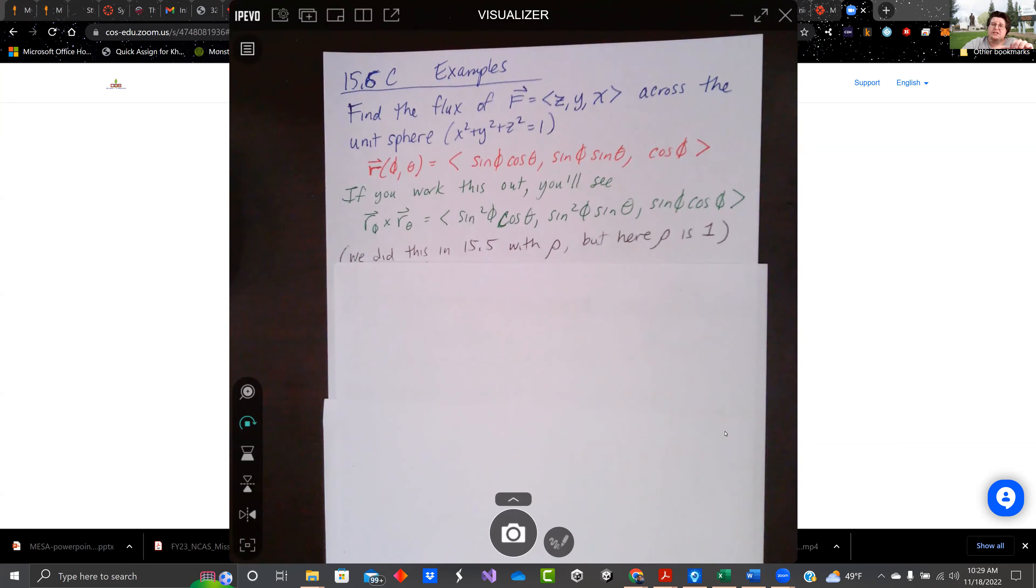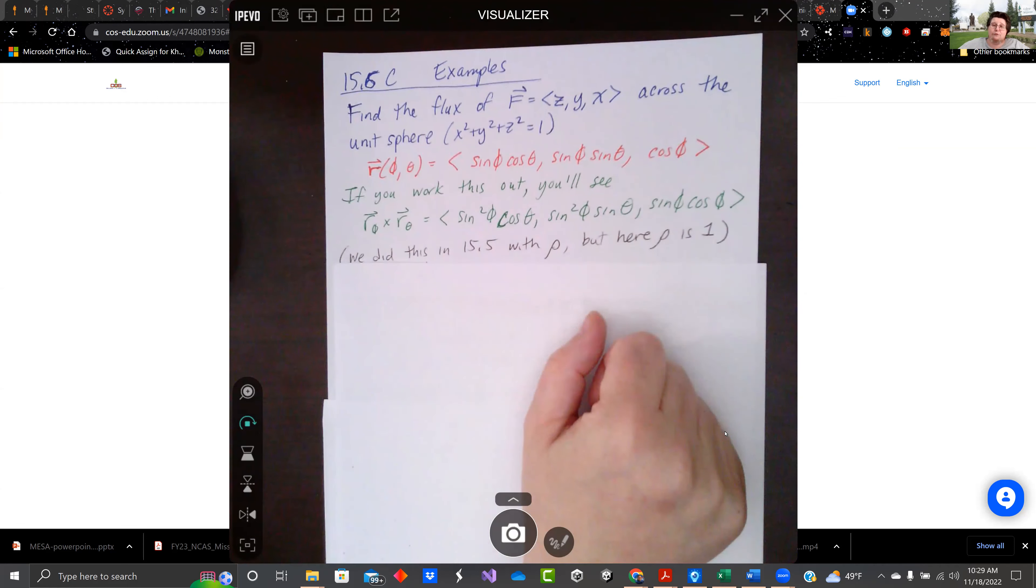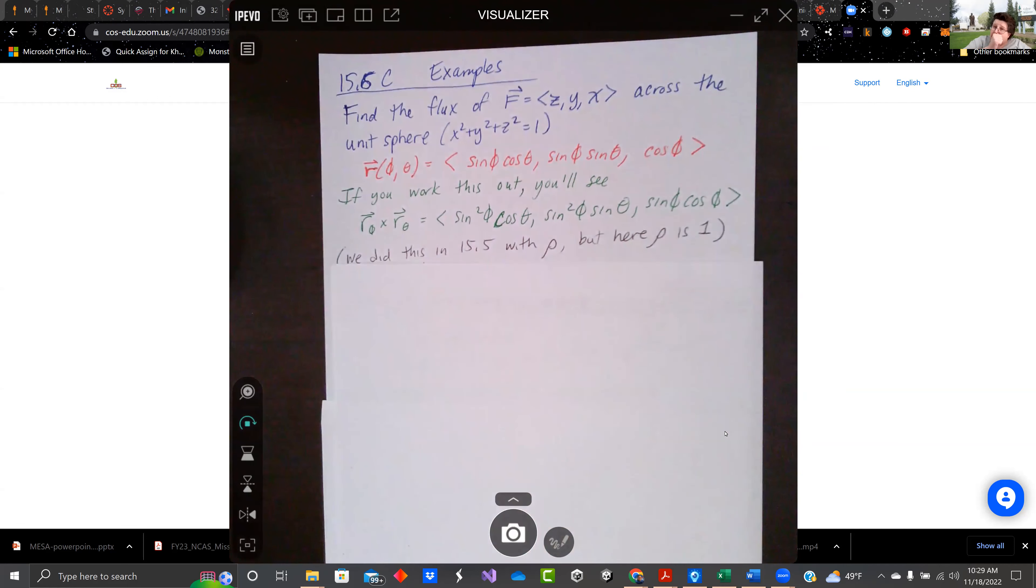Since we're using a sphere, we are going to parameterize it with phi and theta. And if you work it out, you're going to get the cross product of derivative of R with respect to phi cross with R with respect to theta. We did this in 15.5 with rho in it, but rho here is 1 because it's a unit sphere. If you don't believe me, you should work it out again.